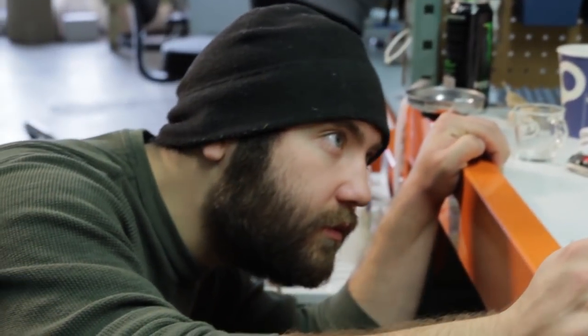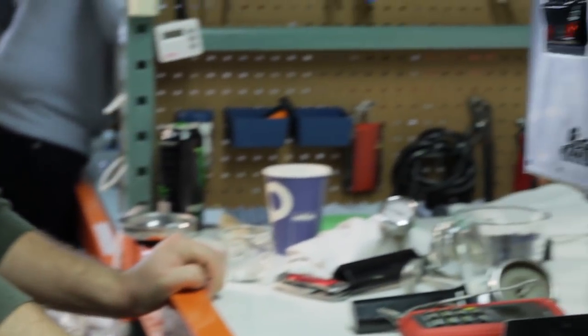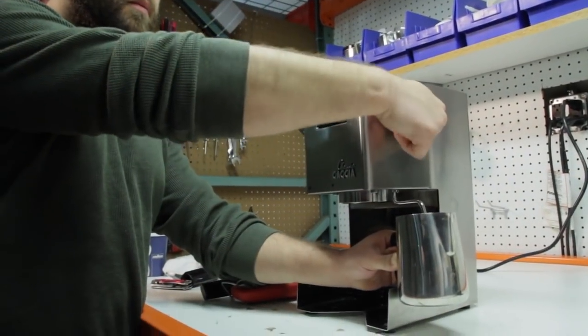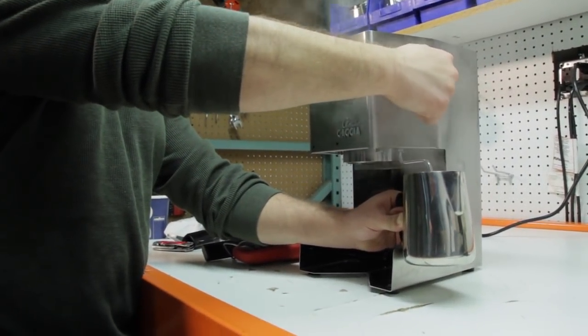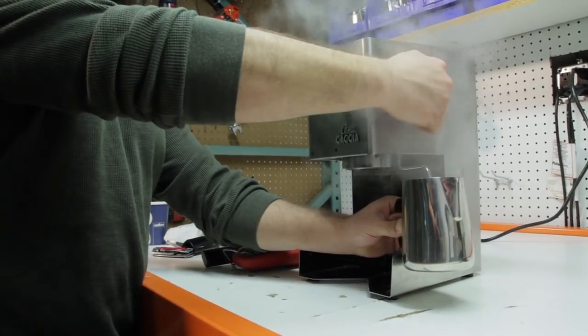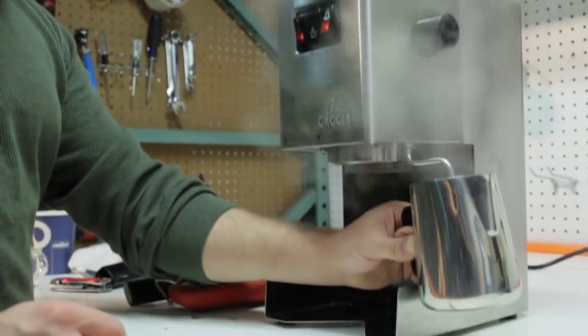At the same time, we're checking for leaks to the brew group because now the hydraulic system is under extreme pressure. And then we check our steam pressure. We open the steam knob and we check to make sure we got really good pressure coming out of it. And then we'll know the steam pressure is fine.